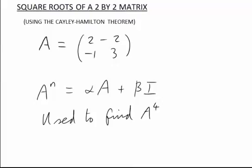In the MathsCast entitled Powers of a 2x2 Matrix, we showed how powers A to the n for any 2x2 matrix could be written as a combination of the matrix itself and the identity matrix, alpha A plus beta I.